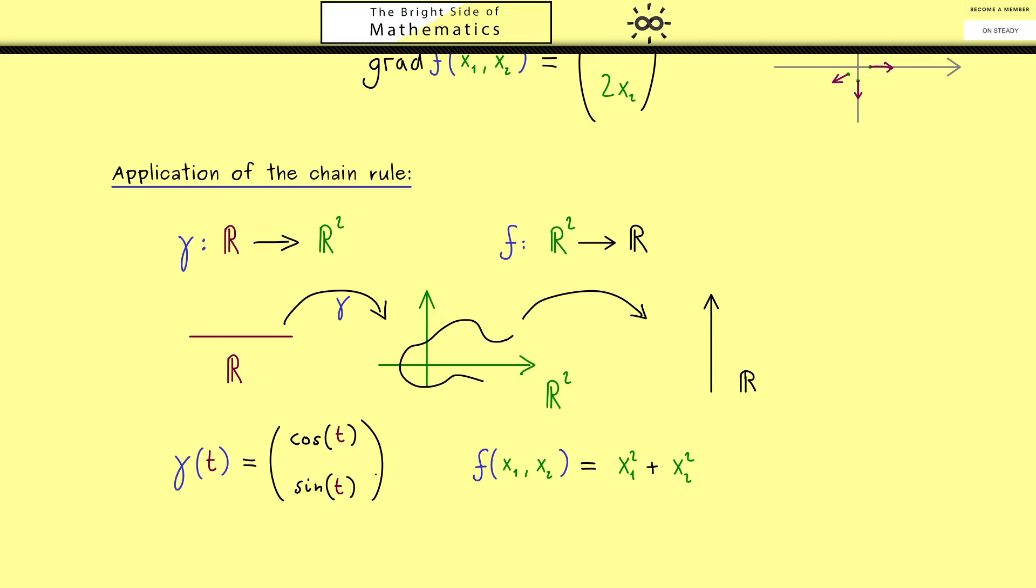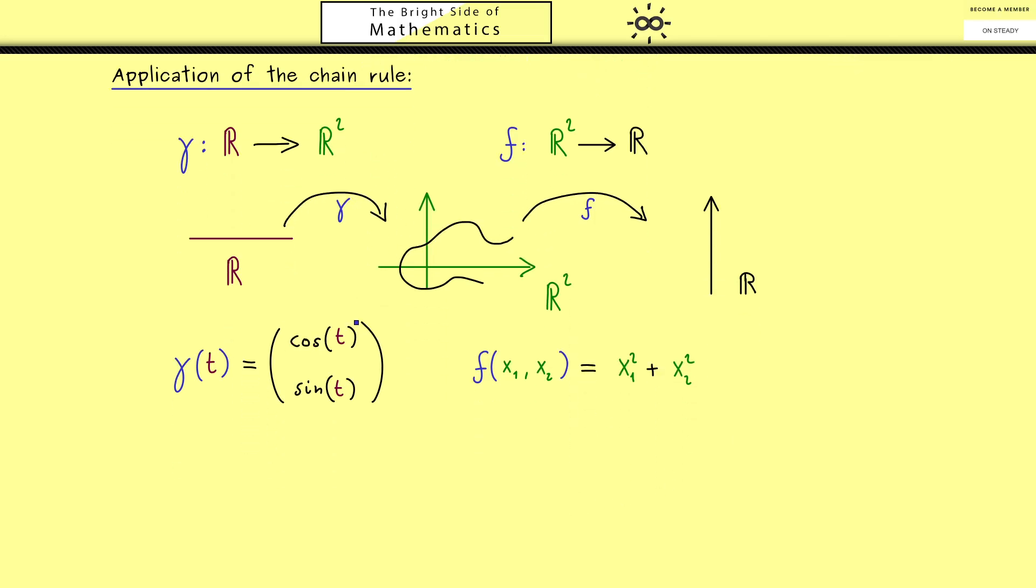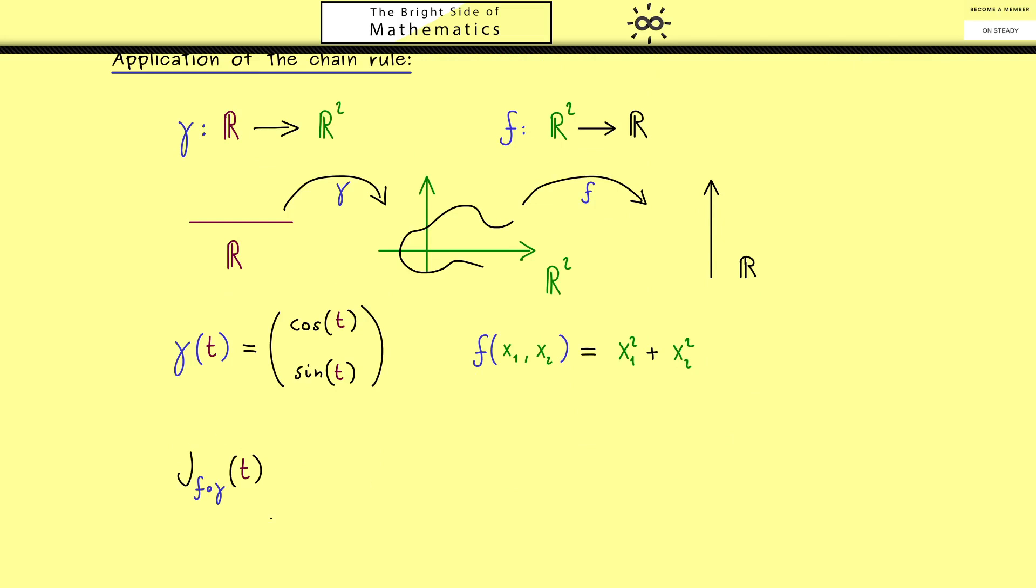Now we have two possibilities to calculate the derivative of the composition of the two maps. First we could put them together and then we could calculate the derivative as a normal one-dimensional one. However of course that is not what we want to do here. Here we want to apply the multivariable chain rule from the last video. And it tells us that the Jacobian matrix of f after γ is given by the multiplication of two Jacobian matrices. Namely we have the Jacobian matrix of f at the position γ(t) times the Jacobian matrix of γ at the position t.